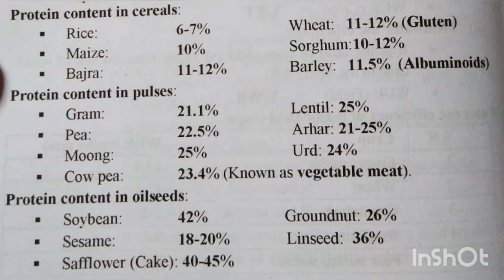Now next one is oil seeds. Oil seeds में: Soybean 42%, Groundnut 26%, Sesame (Sesam) 18-20%, Linseed 36%, Safflower या उसका cake 40-45%. Oil seeds में किसी किसी में बहुत ज्यादा है — जैसे कि Soybean में 42%, Safflower में 40-45%, उससे कम Linseed में 36%, फिर Groundnut में 26%, और Sesame में 18-20%.